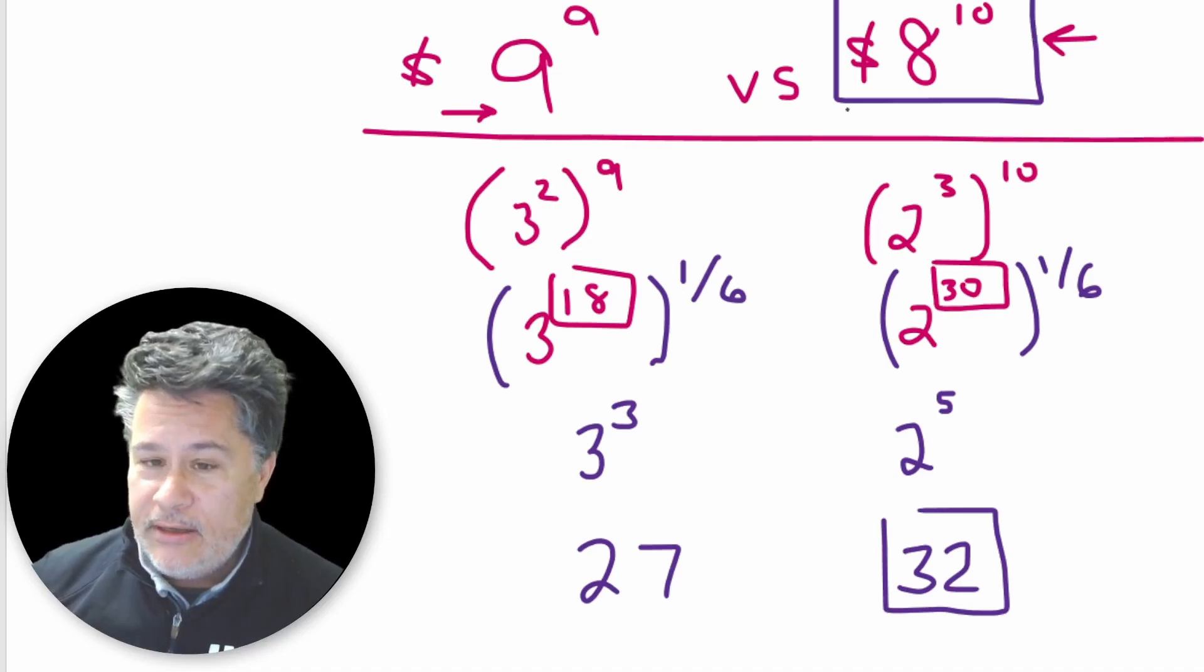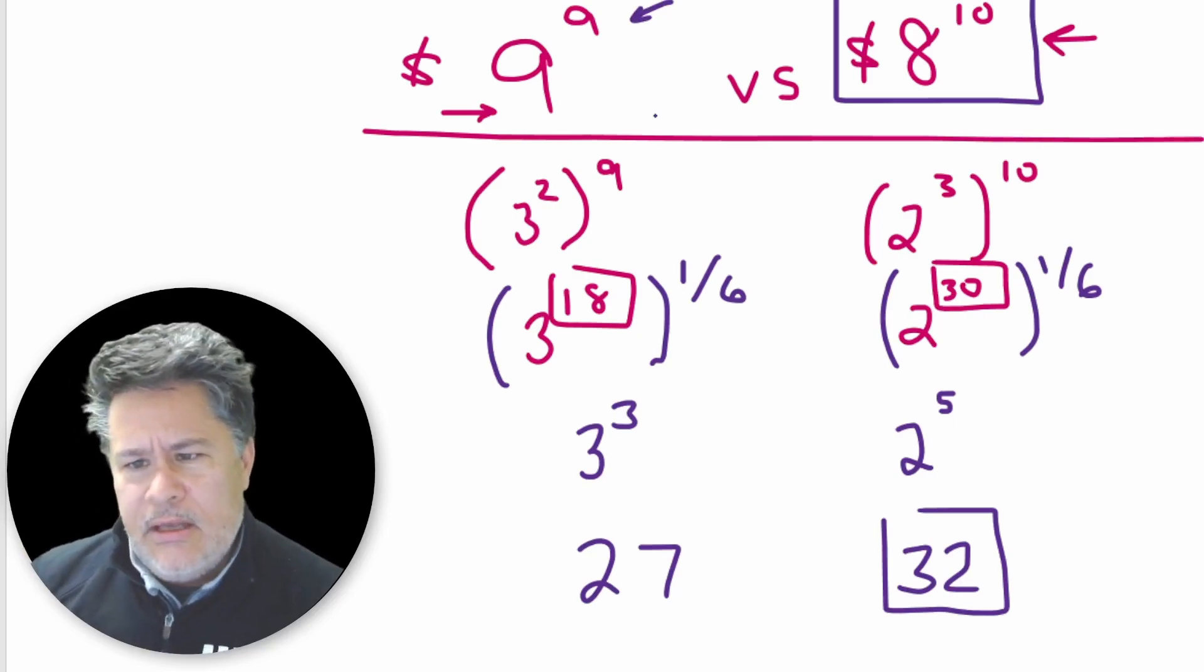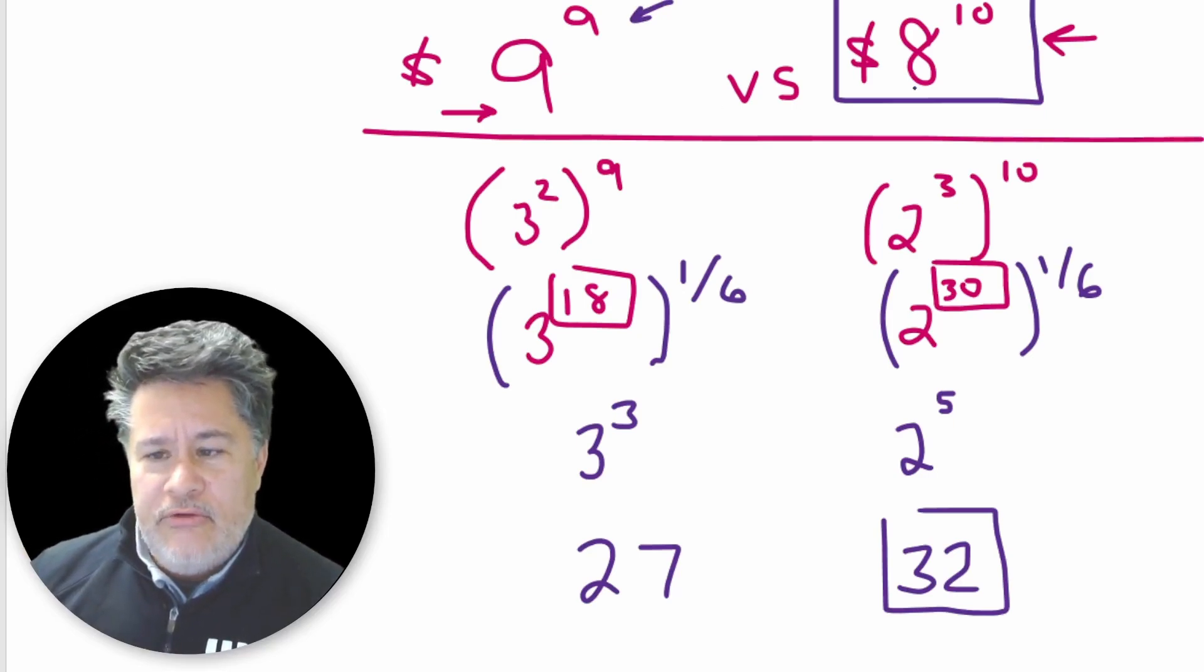So you would have become a billionaire. And the nine to the ninth is, I think I remember it being something like around roughly maybe three hundred seventy million. So it seems like a huge difference, and it is.